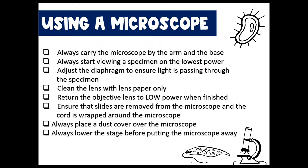Always clean the microscope with lens paper — a special paper used to clean the glass of the microscope. Never use a paper towel, your shirt, or anything other than lens paper. When finished, always return your objective lens to low power, since the next person will start their viewing there. Ensure slides are removed from the microscope and the cord is wrapped around the microscope neatly and securely so nobody trips over it.